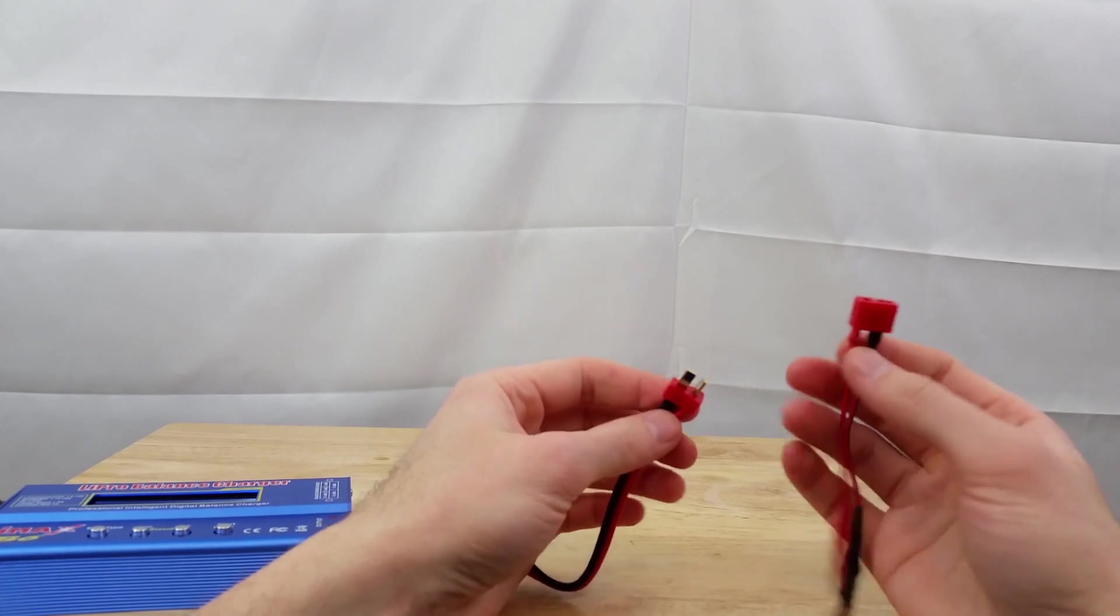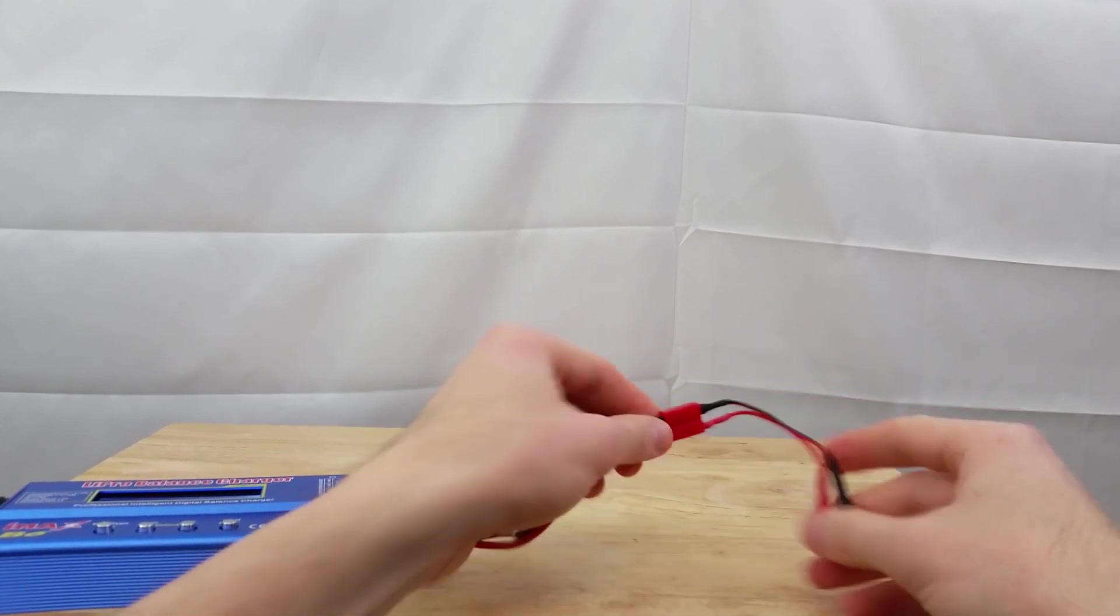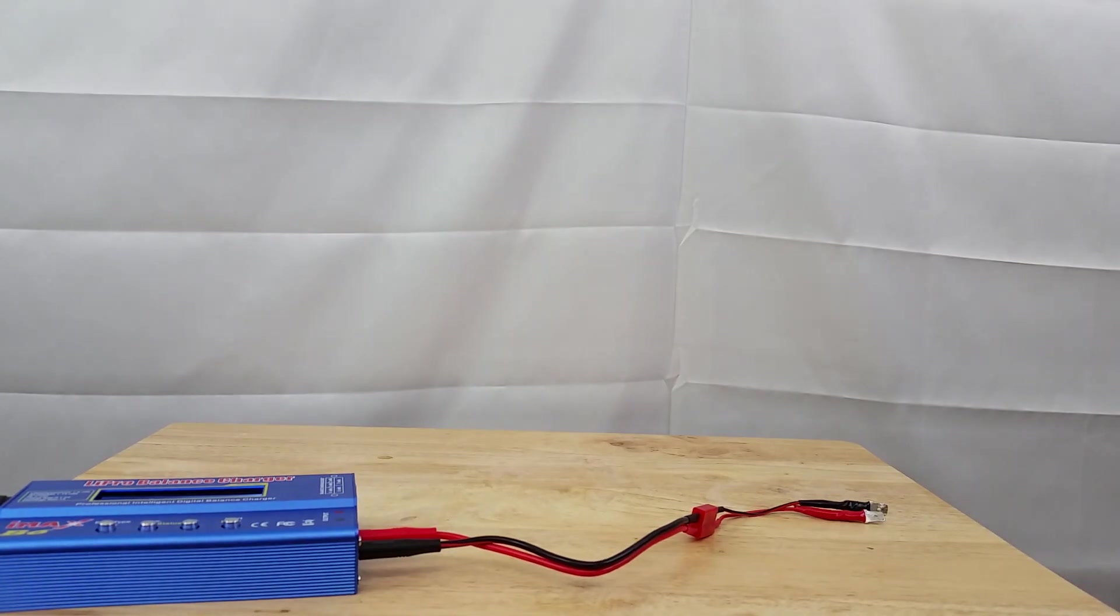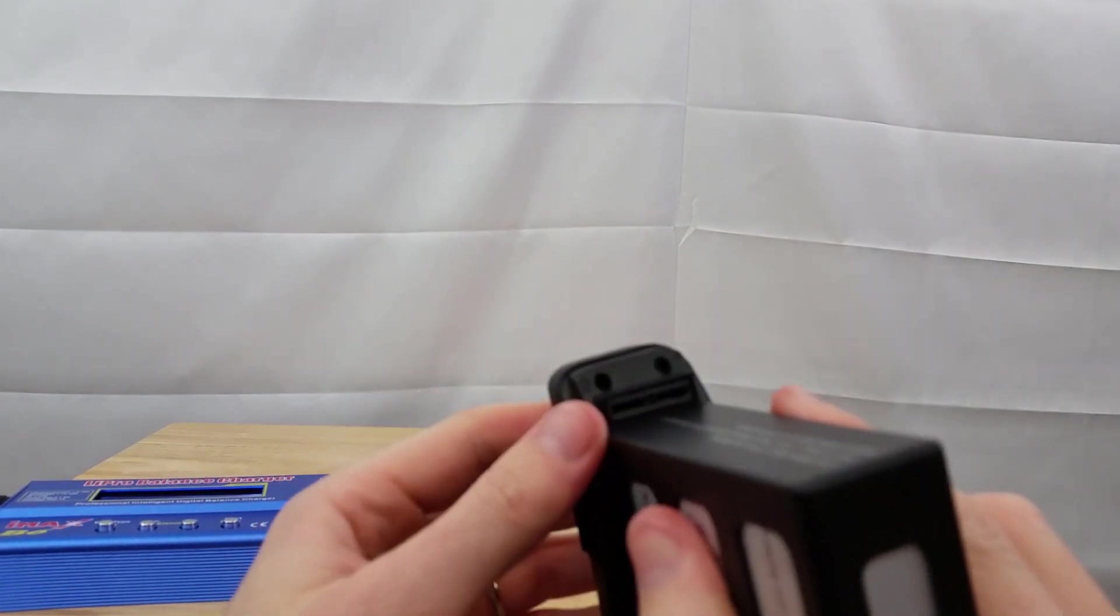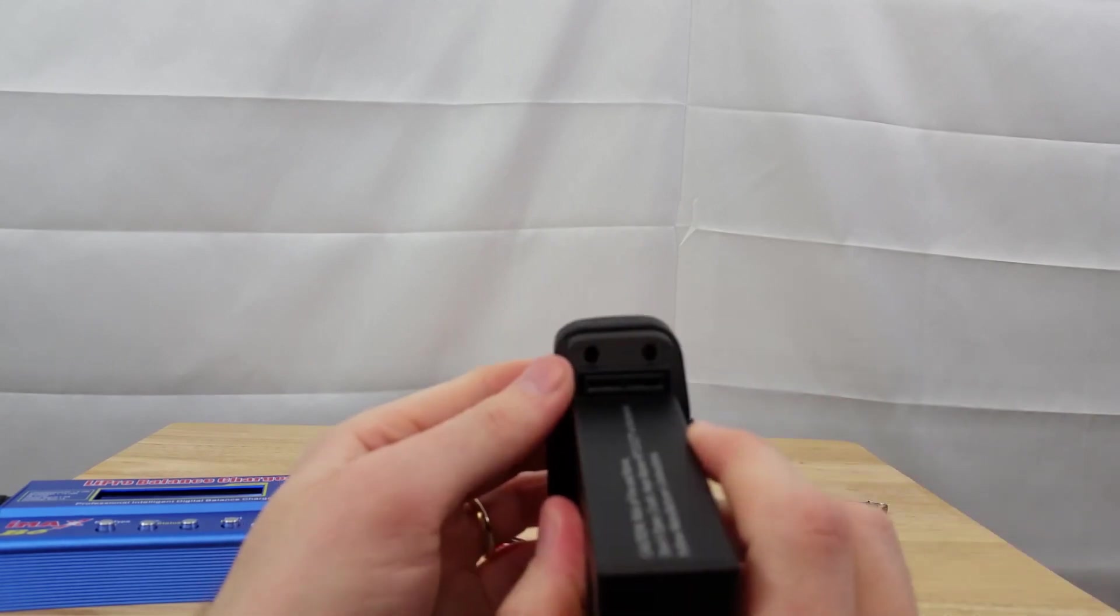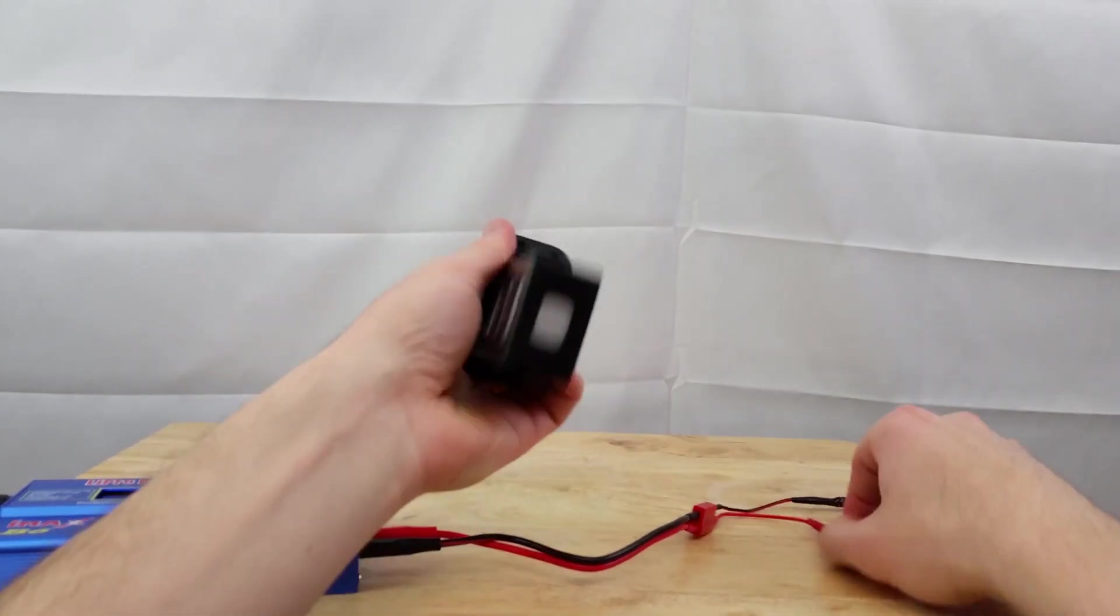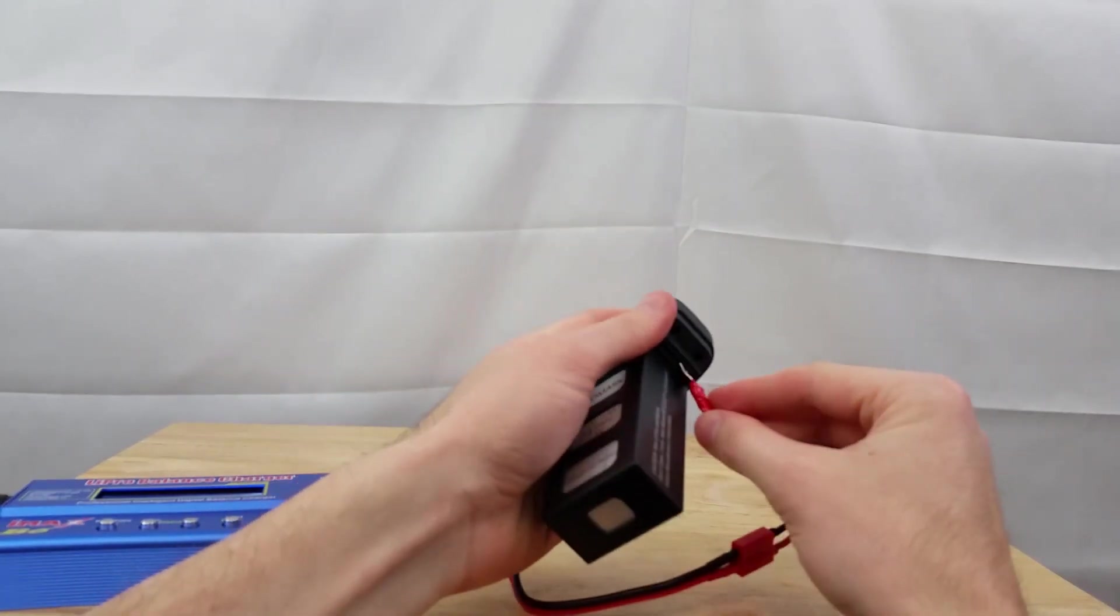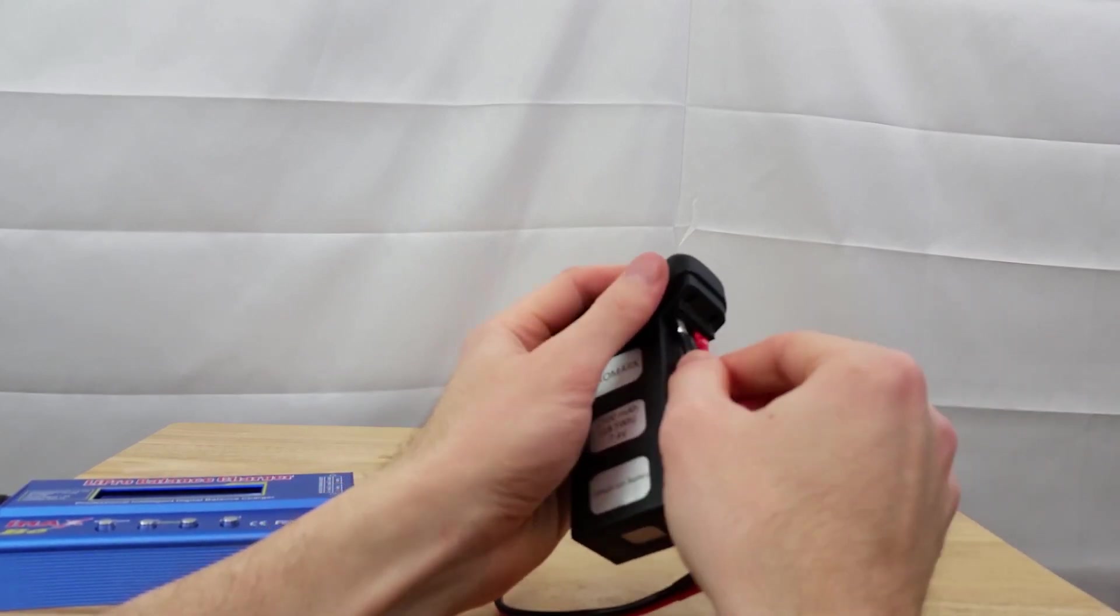So all you do is you push this on here. And you'll notice here on the battery, there is a plus on this side, and a minus on this side. So red goes to the positive. Just push it in there. Black goes to the negative.